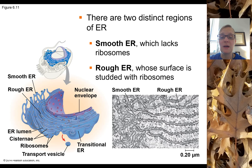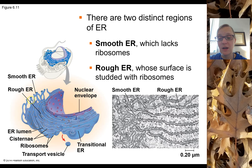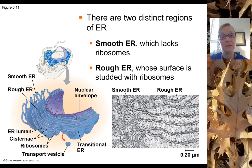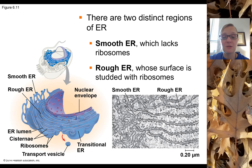The smooth ER is called smooth because it lacks ribosomes on the outside of the membrane, giving it a smooth surface. Its membranes are more tubular and interconnected, somewhat like coral. The rough ER has bound ribosomes covering the outside of its membrane, giving it a rougher appearance. The rough ER membranes are more like flattened sacs that are interconnected, and you can see those tiny black specks — the bound ribosomes — in the electron micrograph.